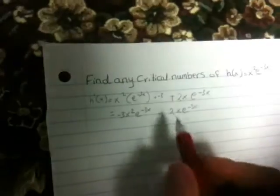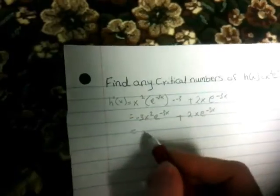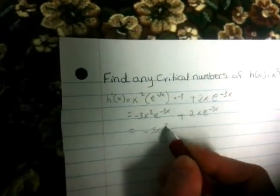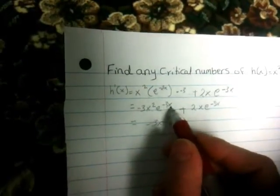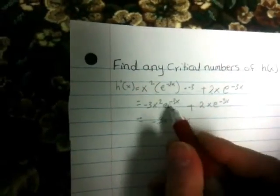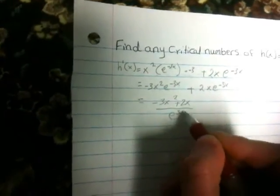Now, we will make them together. We have -3x² + 2x, which is -3x² + 2x. And the e^(-3x), we will make it down so it gets to positive e^(3x).